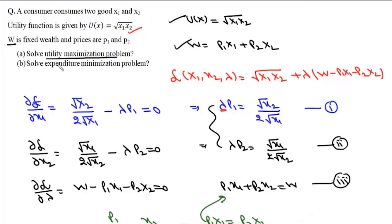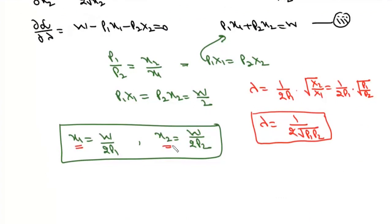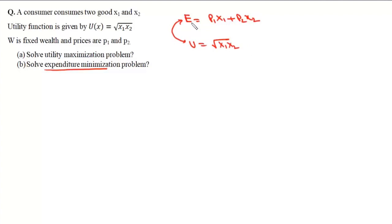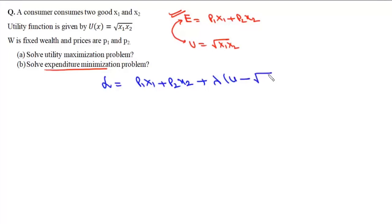For this utility function, utility is maximized at quantities x1 = w/(2p1) and x2 = w/(2p2). With the same setup we can also solve the expenditure minimization problem, where we minimize expenditure p1·x1 + p2·x2 subject to the constraint u = √(x1·x2). The Lagrangian is L = p1·x1 + p2·x2 + λ(u − √(x1·x2)).